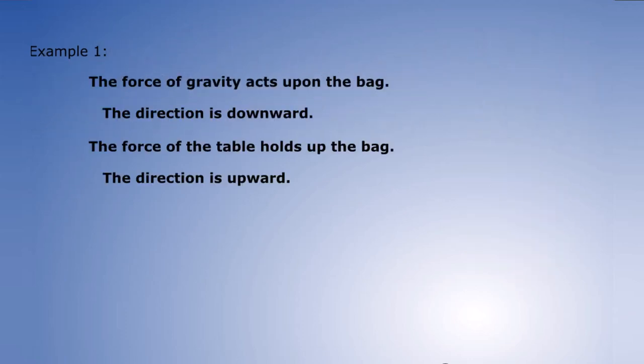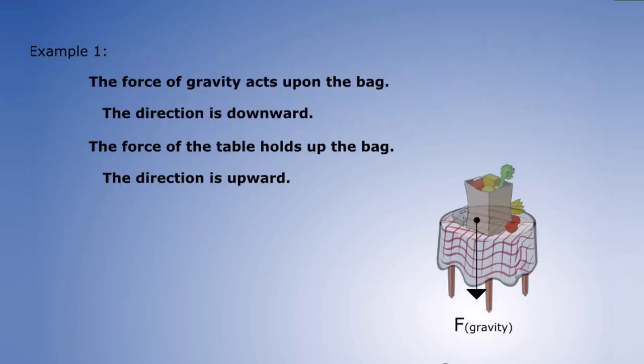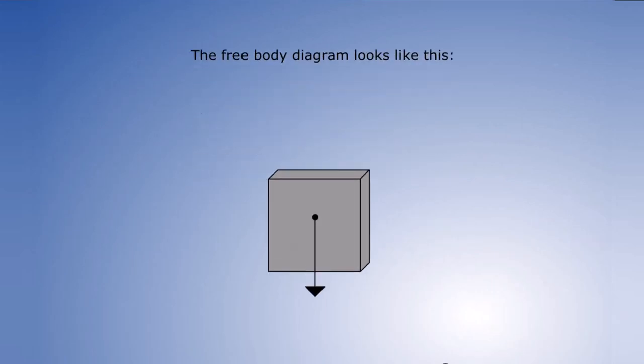The force of gravity acts upon the bag and the direction is downward. The force of the table holds up the bag and that direction is upward. The free body diagram looks like this. The force of gravity is downward and the force of the table is upward.